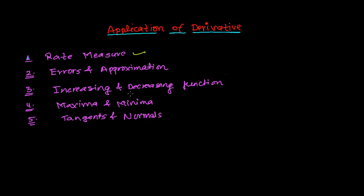With derivatives you can easily determine whether a function is increasing or decreasing. Similarly, for any kind of function, you can find out the maxima and minima — the maximum and minimum points of that function. For example, if a function gives the profit of a company, you can find out what the maximum profit is, or in what condition you are getting the minimum profit.